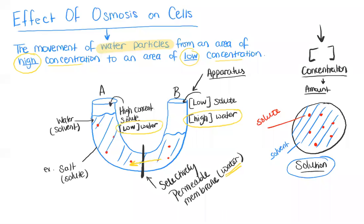Now over time, if we leave this apparatus and allow all the water to pass through, you will notice that you will end up with a higher amount of water on side A than on side B. The water level in side A rises because the water moved in this direction, and the water level in side B decreases because the water left side B to go to side A because of osmosis.